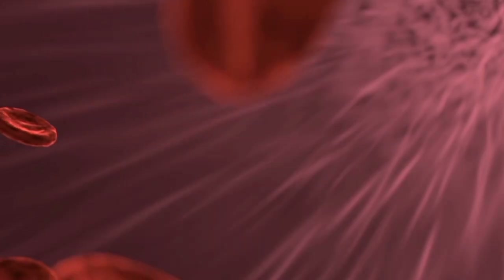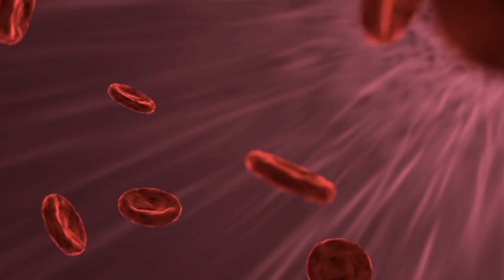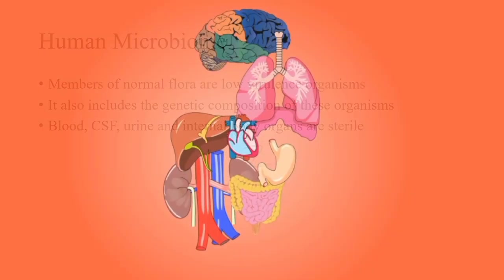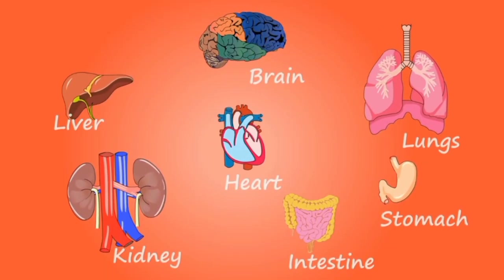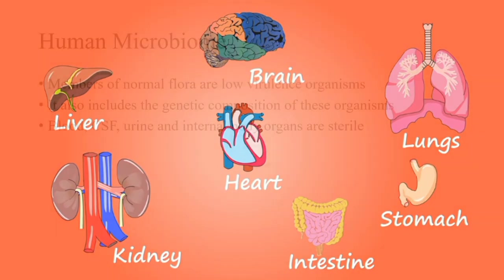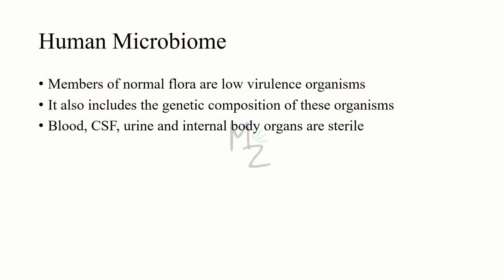Blood, CSF (the cerebrospinal fluid present in our spinal cord), and urine, as well as our internal body organs such as heart, kidneys, and liver — these are sterile. They do not contain any microorganisms like bacteria, fungi, protozoa, or viruses. But if any of these microorganisms enter into these places — into the organs, urine, CSF, or blood — it means this is now a diseased condition.